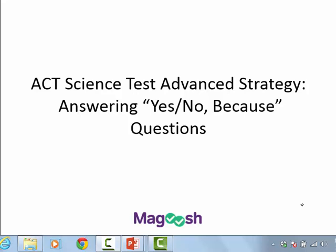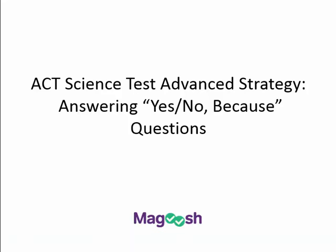In this Magoosh ACT video, we are going to talk about a specific, particularly tricky question type that you will see again and again on the ACT science section. I call these the 'yes, no, because' questions, because the answer choices give you a series of statements that begin with yes or no, followed by a given rationale for that answer. This video is going to give you a very specific strategy to follow that will make these questions much easier and much faster for you to complete.